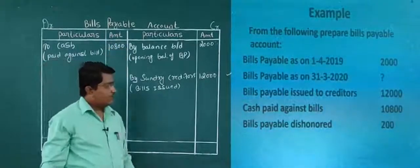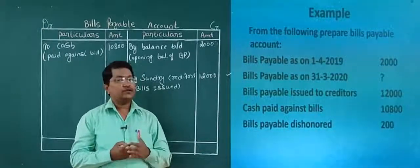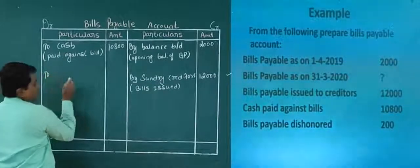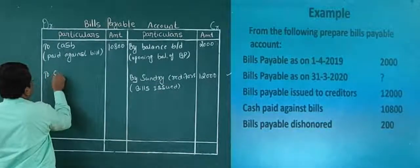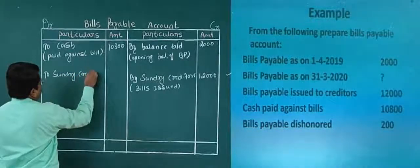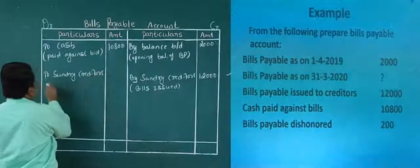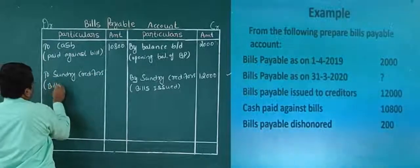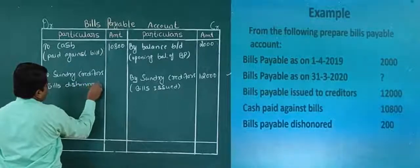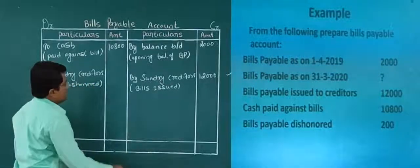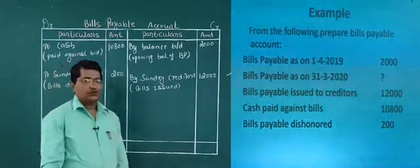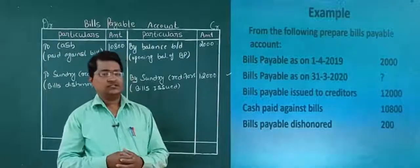Next, last one — bills payable dishonored. Yes, it is recorded on the debit side itself. So here I write: to sundry creditors (bills dishonored). What is the amount? Yes, it is 2000. Now we need to balance it.